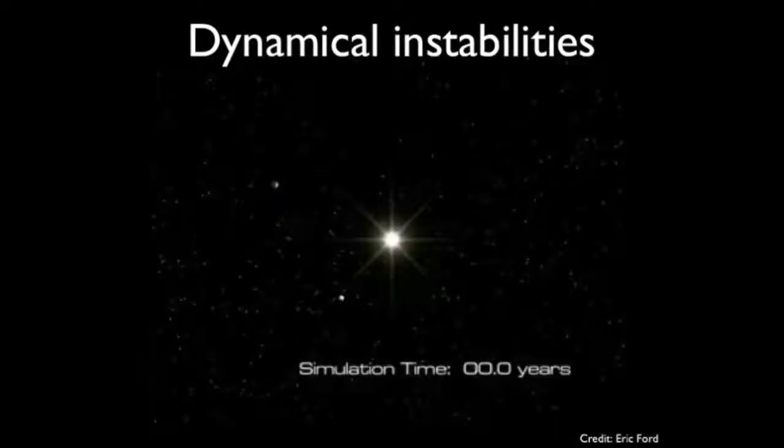Another process that's really important in planet formation is dynamical instability. We think that most planets form on relatively circular orbits, but a lot of the planets that we see are on very stretched out orbits, and we think they get there by dynamical instability. So when a system forms many planets on circular orbits, those planets interact with each other gravitationally. They can change each other's shape, and sometimes their orbits cross.